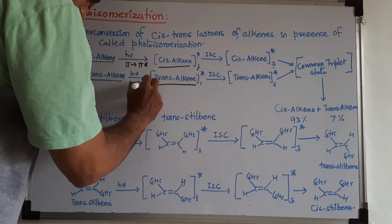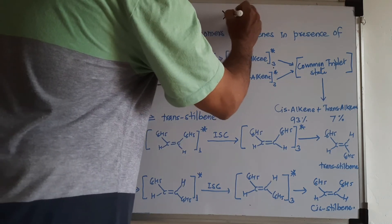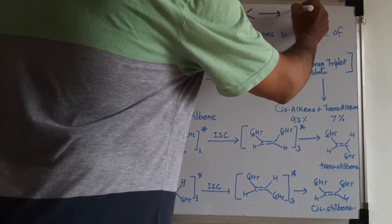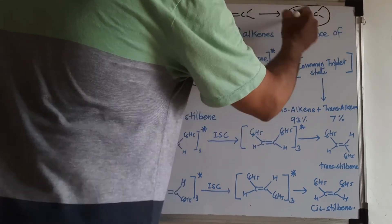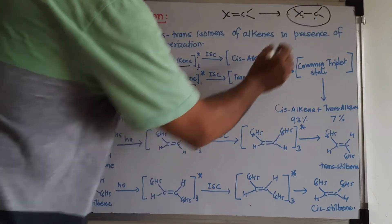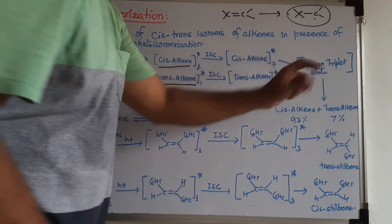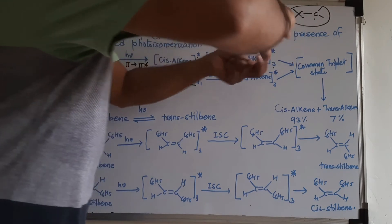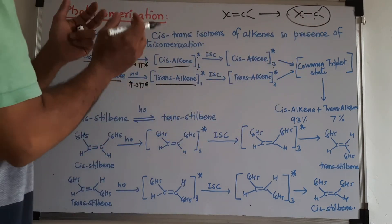In the case of alkenes, a pi to pi* transition takes place — one electron is excited from the pi bond. This leads to the formation of a biradical. This biradical in the triplet state is common for both cis and trans isomers; that is why it is called the common triplet state. In this state there is no longer a pi bond, so rotation around the carbon-carbon single bond becomes possible.